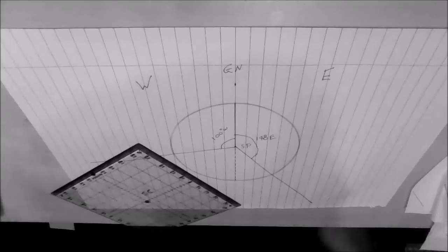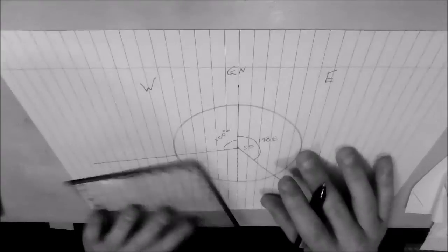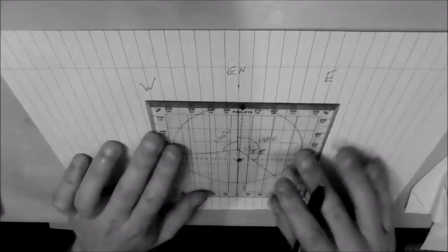OK, it says at 160 degrees west it wants to know the grid track and the true track. So what we will also do is at 160 degrees west, like it says in the question, we will mark on that line.